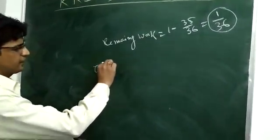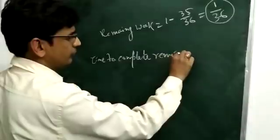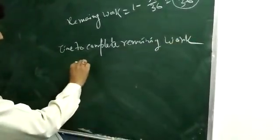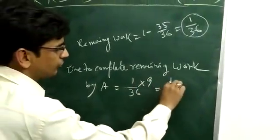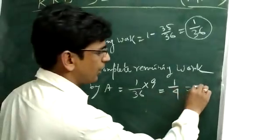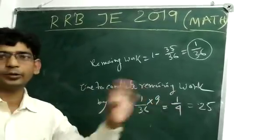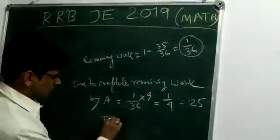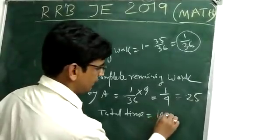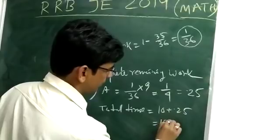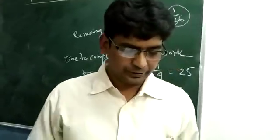Time to complete the remaining work: 1 by 36 into 9 equals 1 by 4, which is 0.25 days. So the total is 10 plus 0.25, which equals 10.25. That is the answer: B.